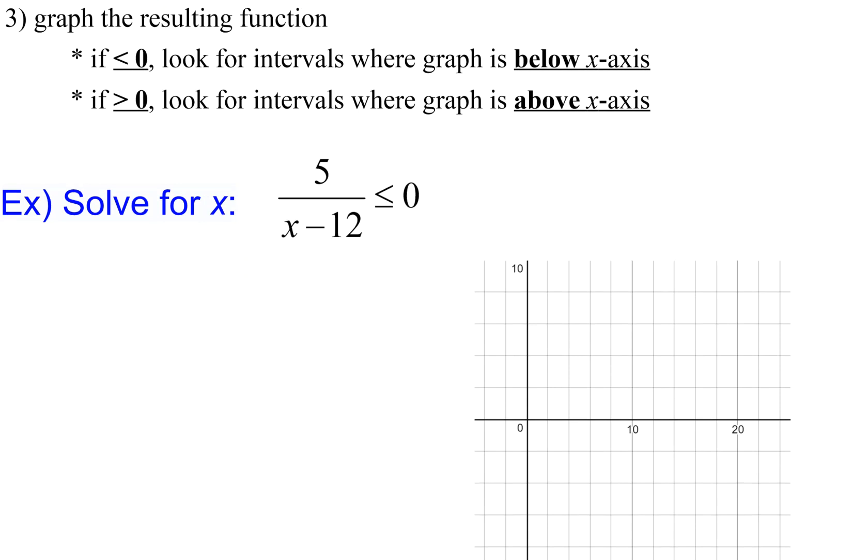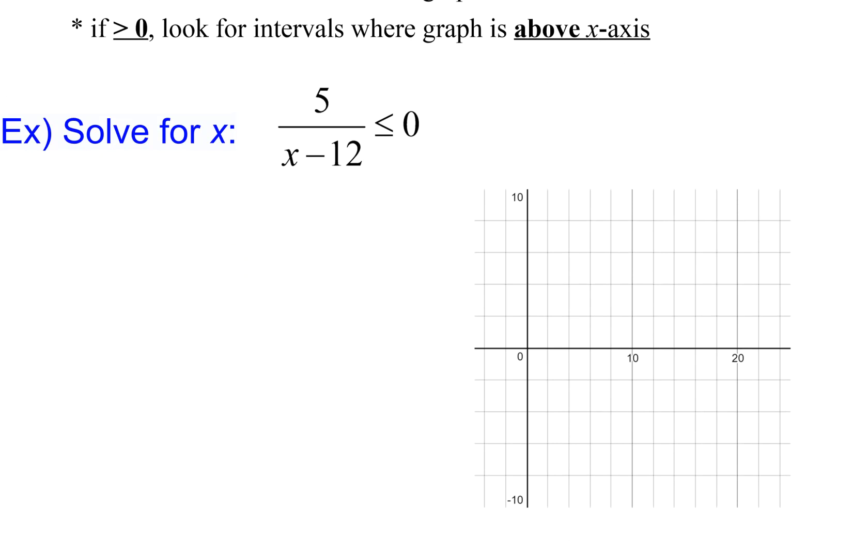Here's a pretty simple example to start with. In this one, I have 5 over x minus 12 is less than or equal to zero. So the first thing is, are there any x-intercepts? No. Because this numerator is just 5, and that's never going to be equal to zero.